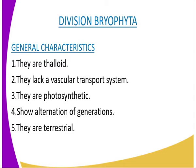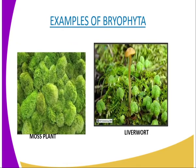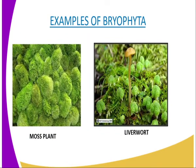Now I would like us to look at Bryophyta, whereby we are going to look at the general characteristics of this division. One is that they are thalloid, as in liverworts, or differentiated into leaf-like and stem-like structures, as in mosses. We can have examples of this Bryophyta — you can see the moss plant here in our diagram on the screen.